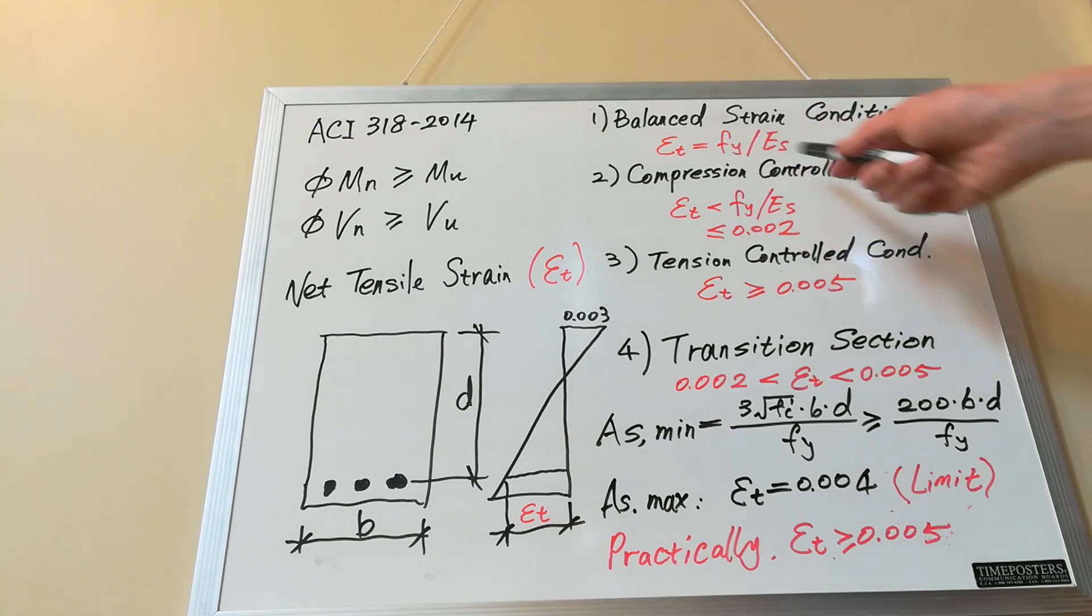What will happen in this condition is a brittle failure mode with little warning because the concrete reaches its limit, crush limit, and fails by compression. An example of such condition is a column subject to significant axial compression.